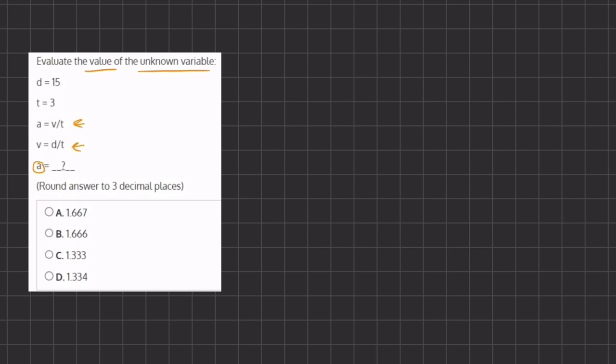If we want to solve for the value of a, we need the values of v and t. We don't have the value of v because we still need to solve for it, so we're going to use this expression and plug in the values that we know in order to solve for v.